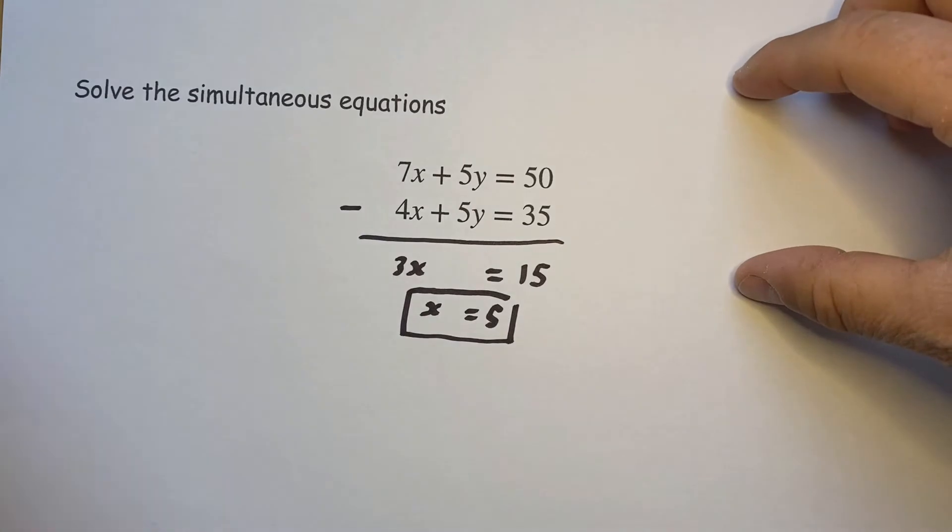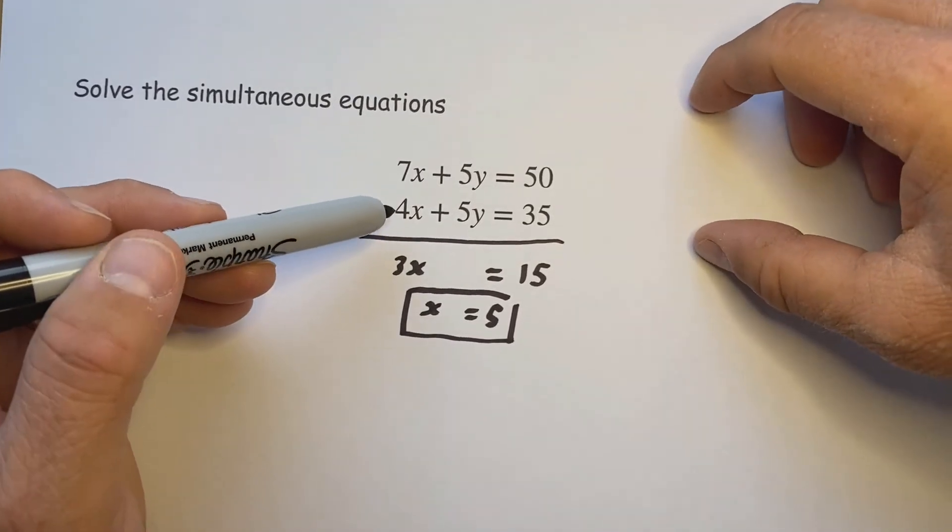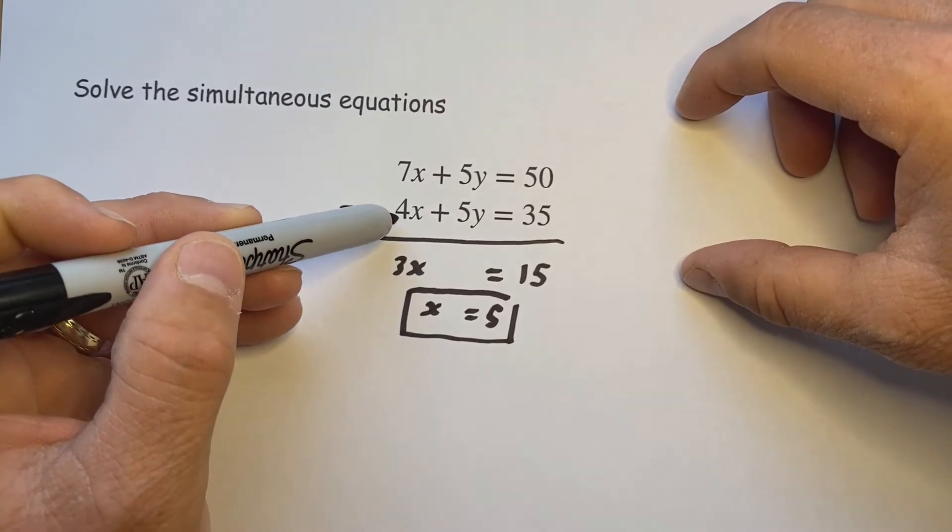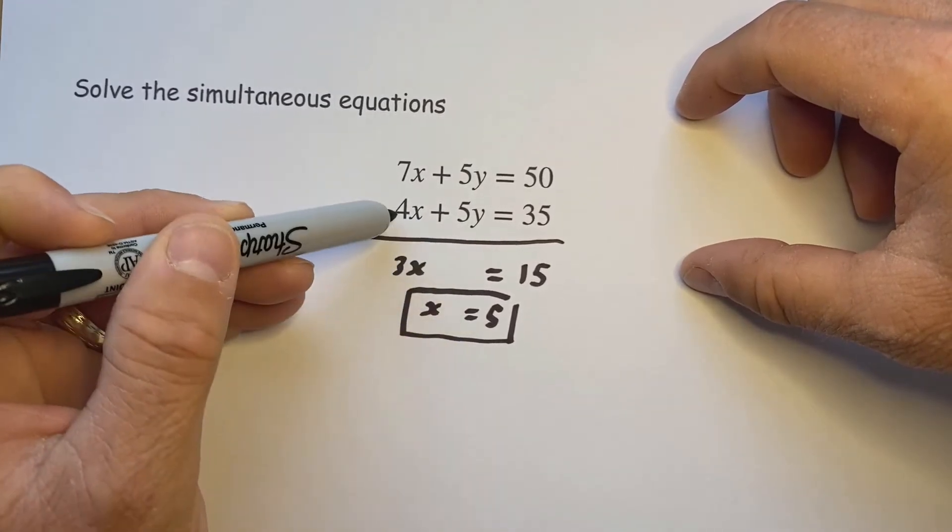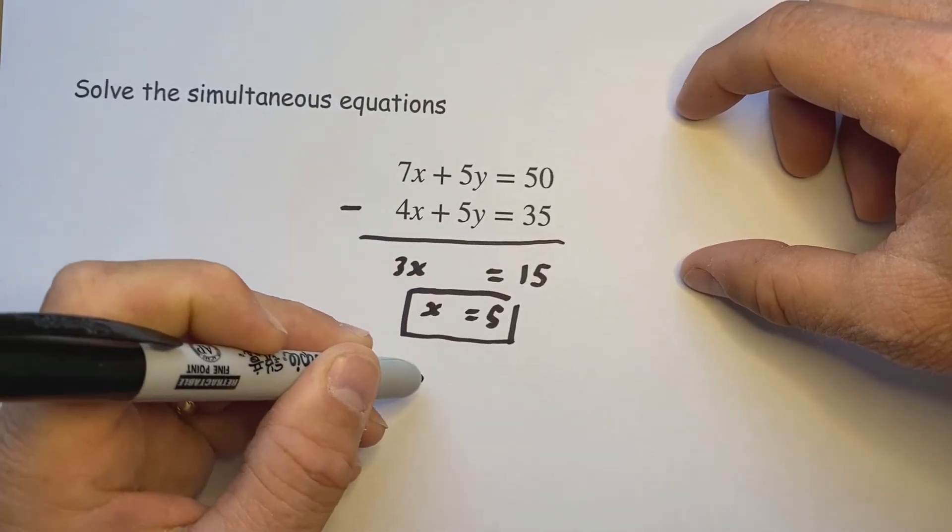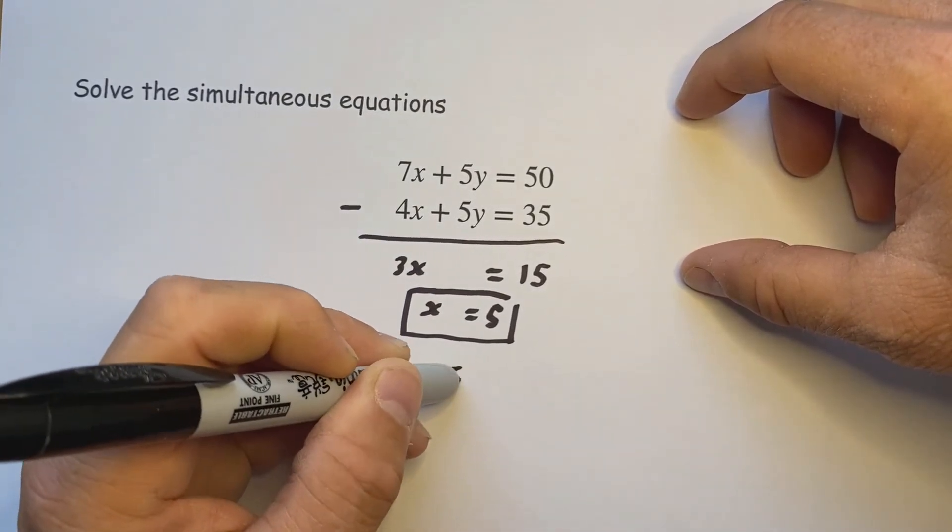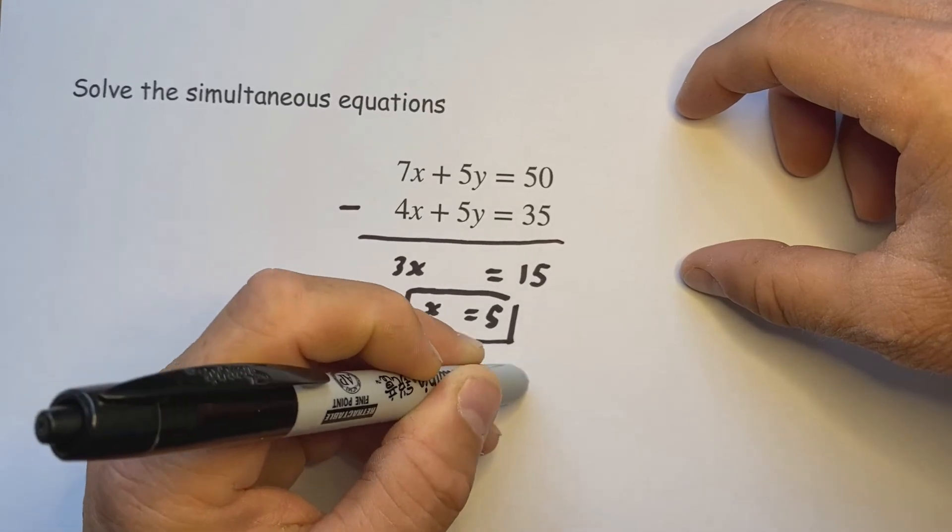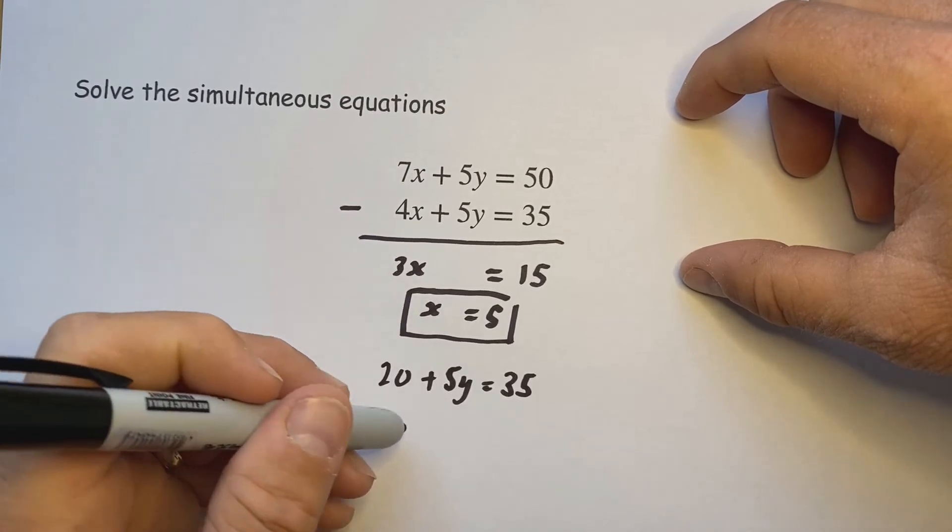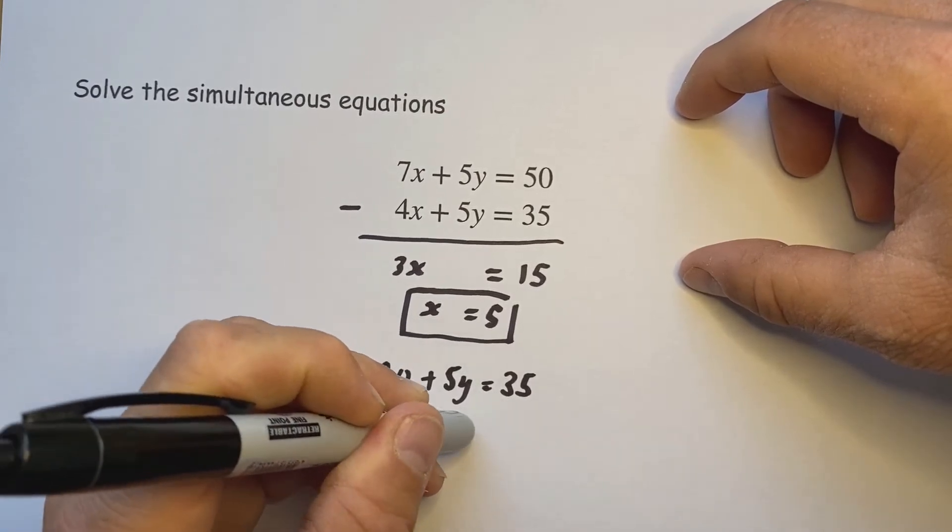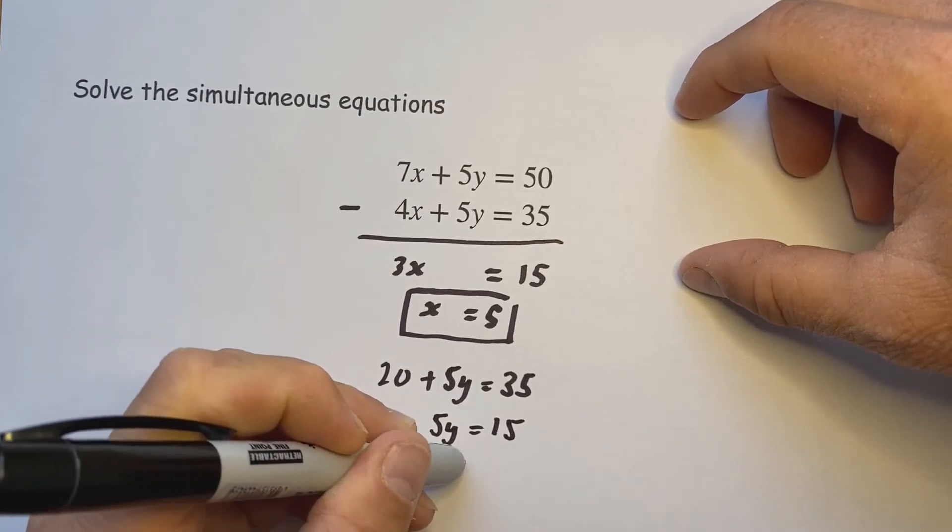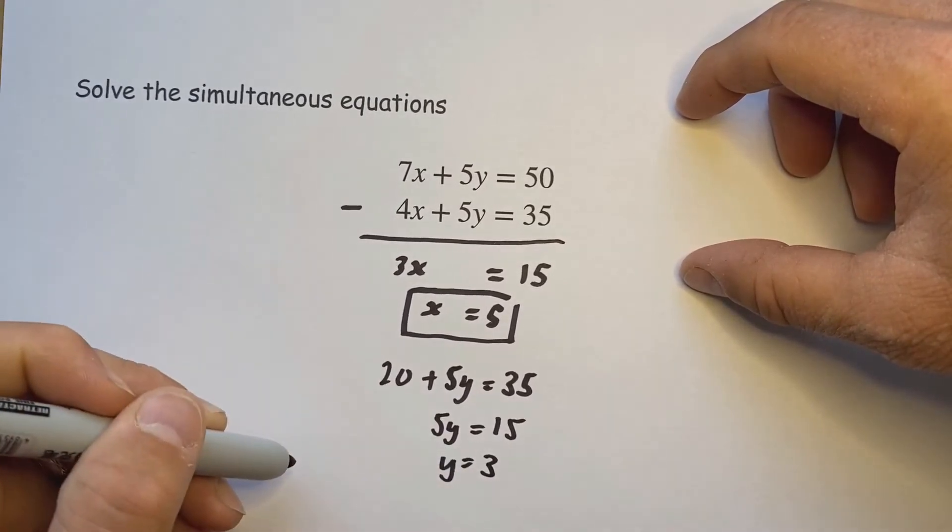Now if x is equal to 5, again it doesn't matter which equation you put it into, they both have biggish numbers but I'm going to go with this one down here. So if x is equal to 5, 4 times 5 we've got 20 there plus 5y equals 35. If I move the 20 to the other side becomes a take 20, so 5y equals 15. And if I go through the 5 times table that produces the answer 3.